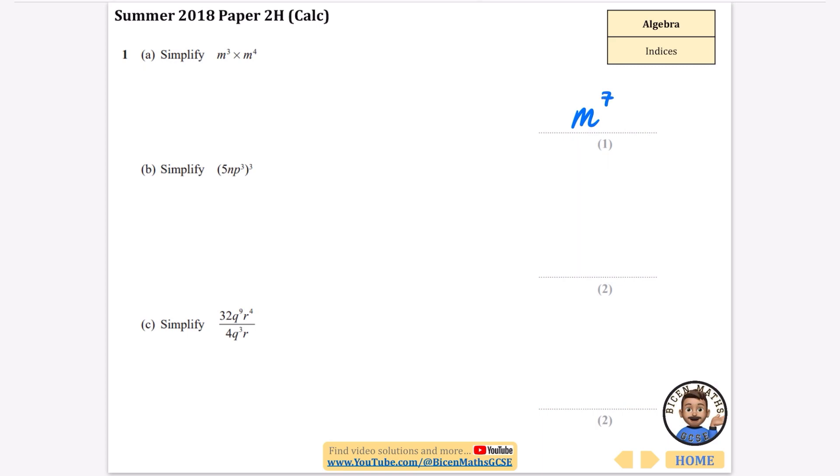This time we want to cube this expression, so we need to do 5 cubed first of all, and 5 times 5 times 5 is 125. You can check that on the calculator. When I cube the other ones, I will get n cubed, and when you have brackets here, p cubed, all cubed, you do those 3 times 3 for brackets, so you get p to the power of 9.